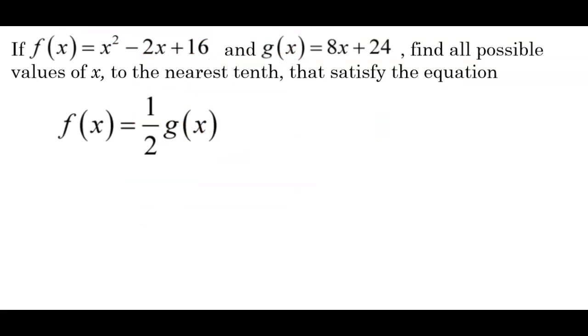Our next example, if f(x) equals x squared minus 2x plus 16, and g(x) equals 8x plus 24, find all possible values of x to the nearest tenth that satisfy the equation f(x) equals 1 half times g(x). So we'll replace f(x) with x squared minus 2x plus 16. That's going to be equal 1 half times g(x), which we'll replace with 8x plus 24.